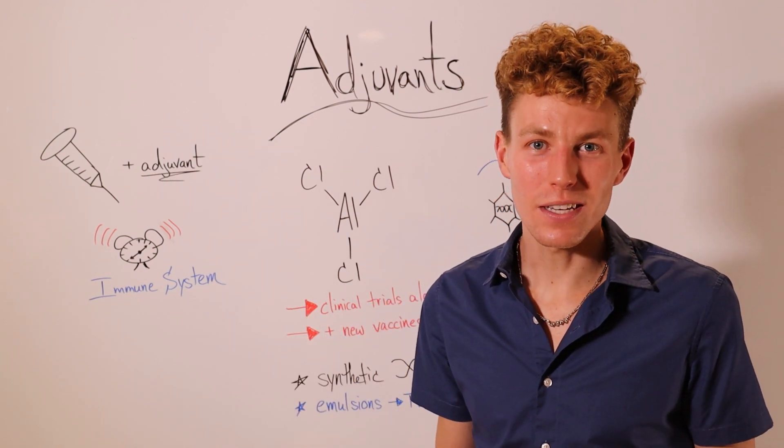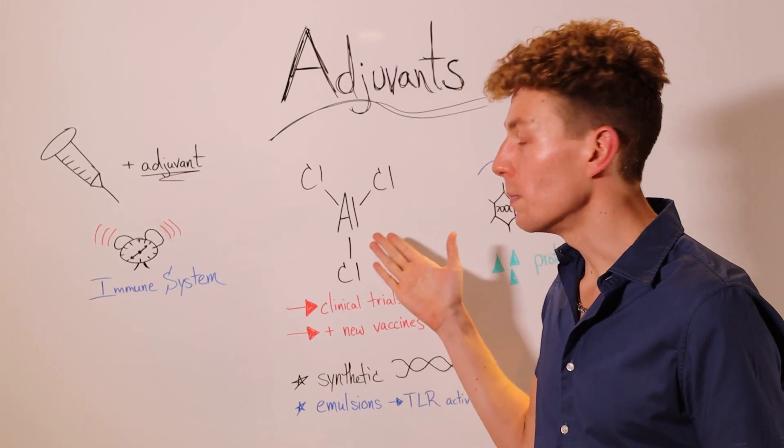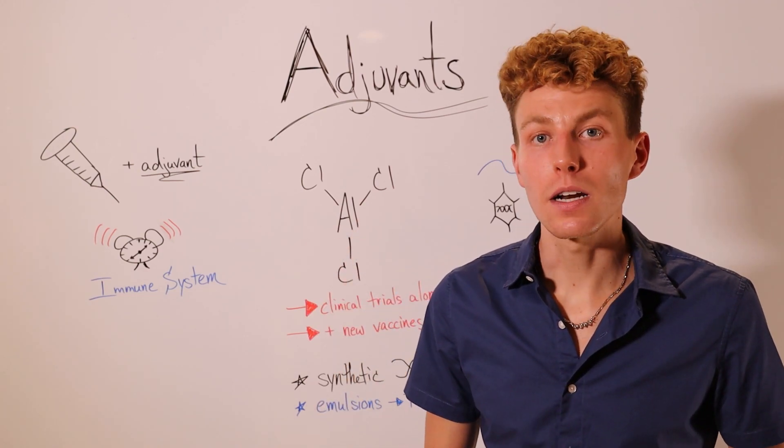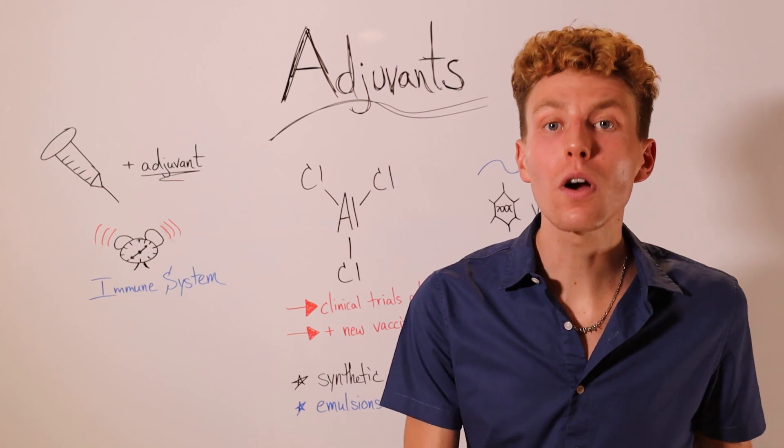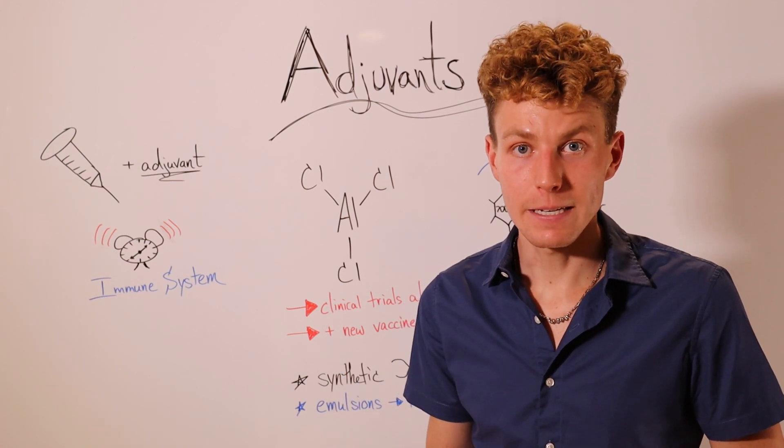Now for the past 50 years we've really used one main adjuvant and that's been aluminum salts and that's because those aluminum salts help to keep the vaccine in our bodies for a bit longer so more of our immune system is able to respond to that vaccine.